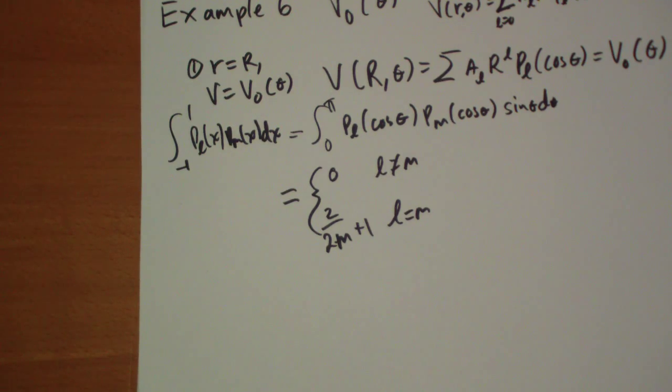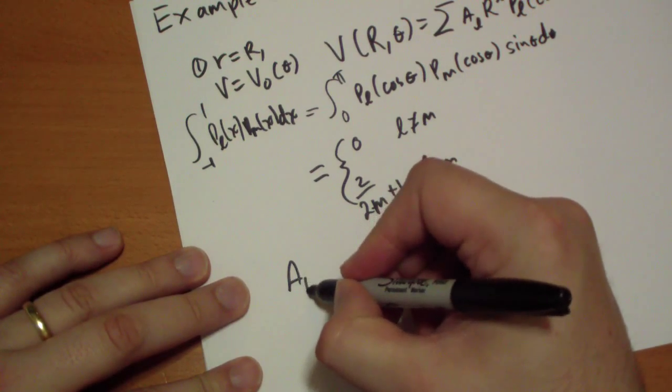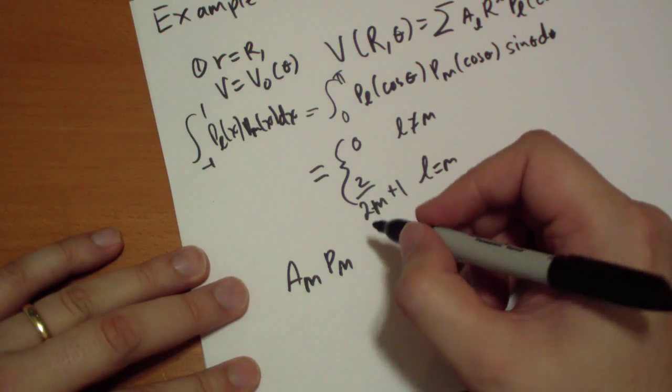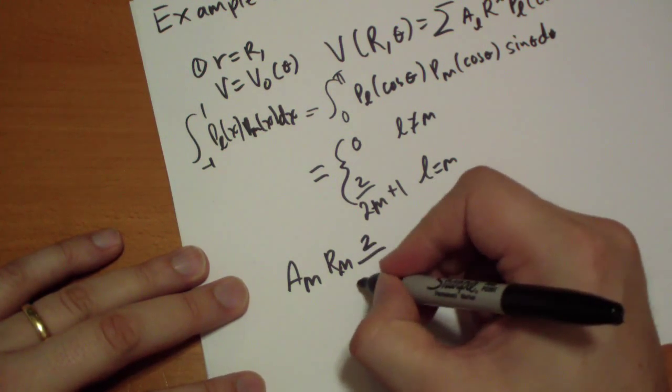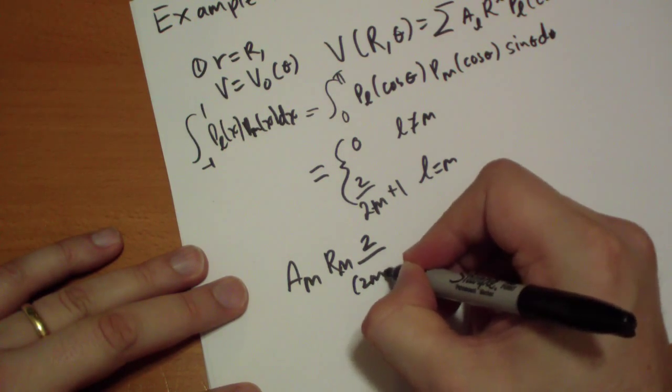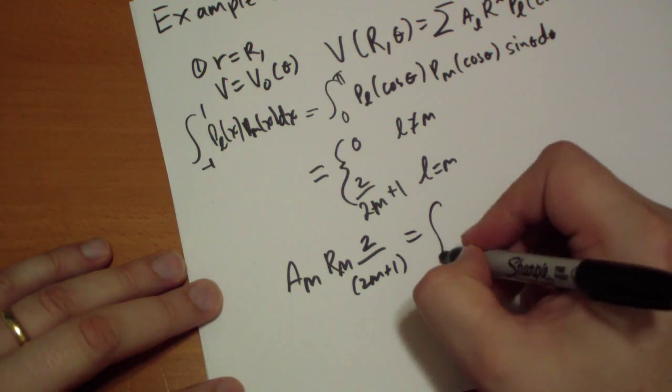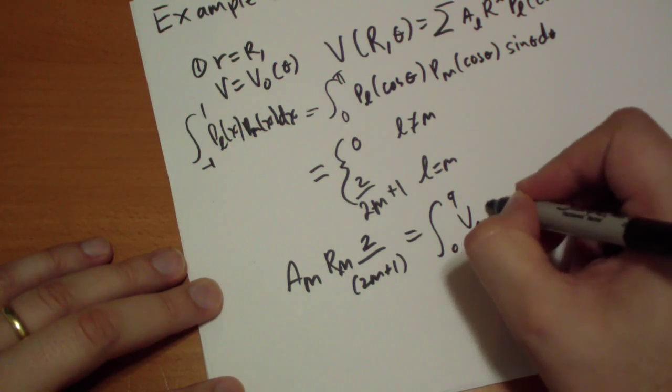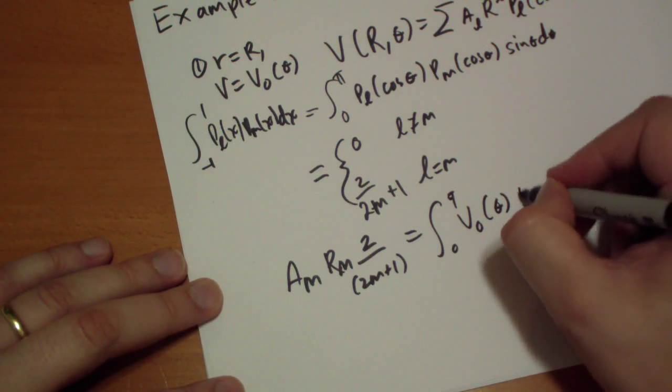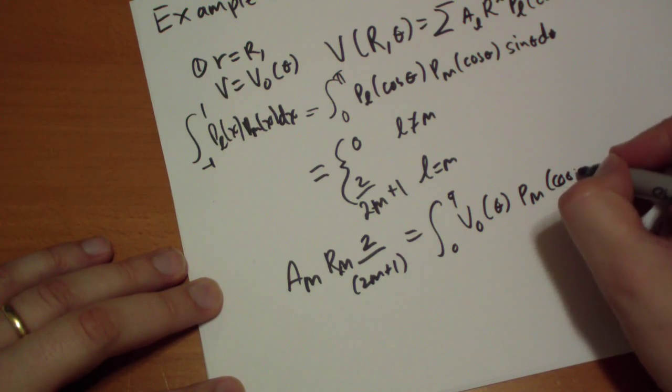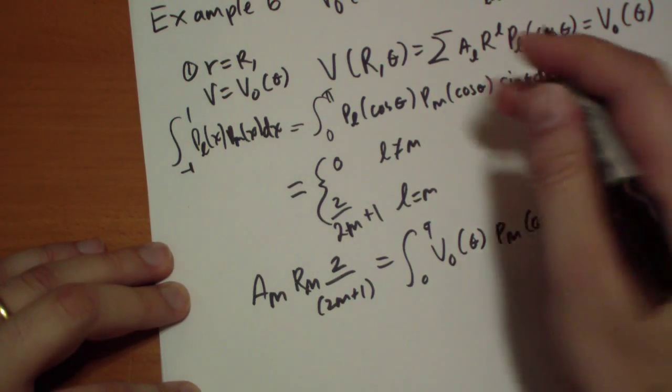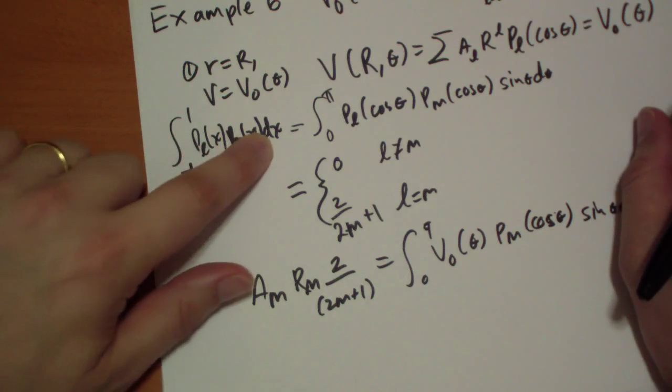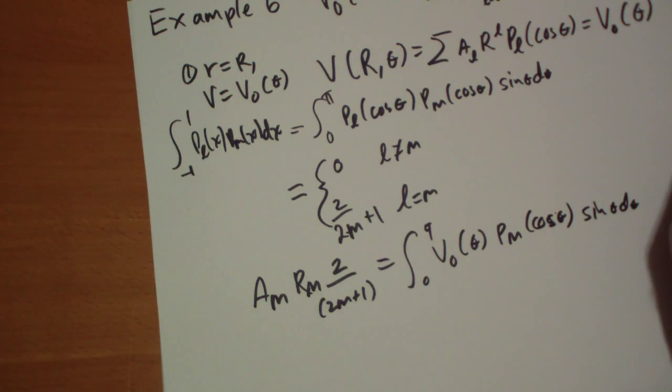So if we multiply both sides by P_m cos theta and integrate, we can pull out that one term. So we have a_m P_m—no I did something wrong here—a_m R^m, and then the P_m will be plus 1. We're going to integrate from 0 to pi of our potential in theta, P_m cos theta, and again sine theta d theta, because we're really taking the integral over x and so we need that sine theta d theta because it's really dx.